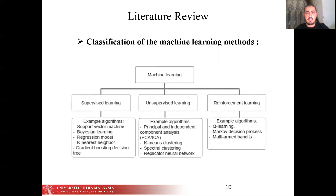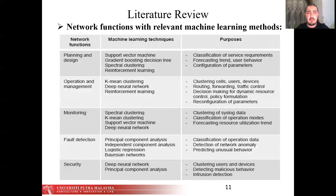Literature review for the classification of machine learning methods: machine learning is divided into supervised learning, unsupervised learning, and reinforcement learning. This is a review of network functions with the relevant machine learning methods. Network functions include planning and design, operation and management, monitoring and fault detection, and security.